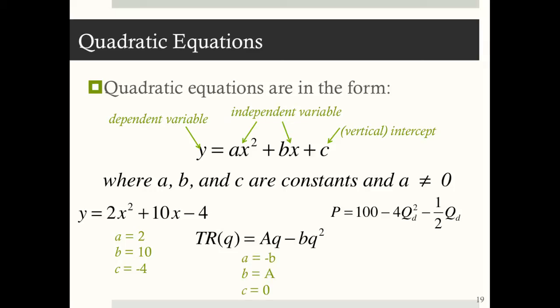For this total revenue function, TR is equal to aq minus bq squared. The a value is equal to negative b, the b value is equal to a, and there's no constant, so c is equal to zero. And then in this quadratic inverse demand function, p is equal to 100 minus 4q squared minus one-half q, we have that the a value is negative 4, the b value is equal to negative one-half, and that constant c is equal to 100.